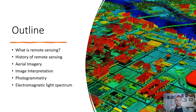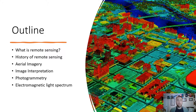For this week's lecture the outline includes: what is remote sensing, a history of remote sensing, aerial imagery, image interpretation, photogrammetry, and the electromagnetic light spectrum.